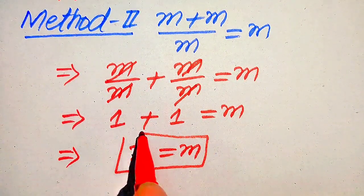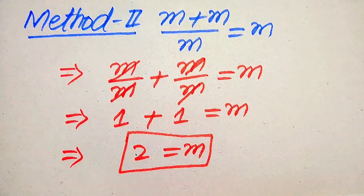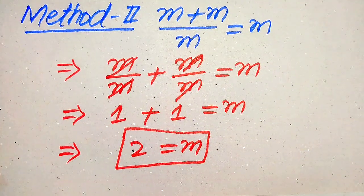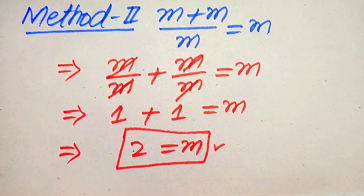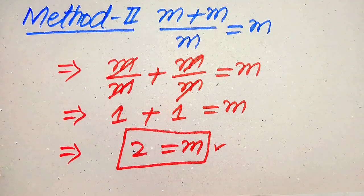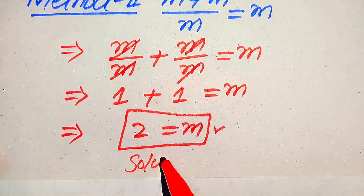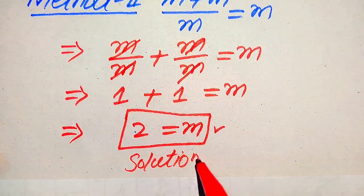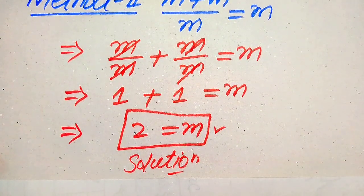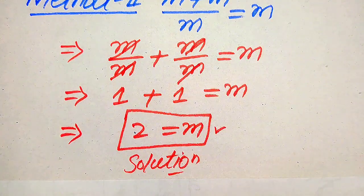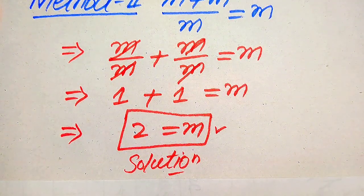So m equals 2 is the value we get from the second method as well — the same result we already obtained and verified in the first method. This is the only solution of the given equation. That is the final answer. Thank you so much for watching this video. Please subscribe to my channel for more exciting videos.